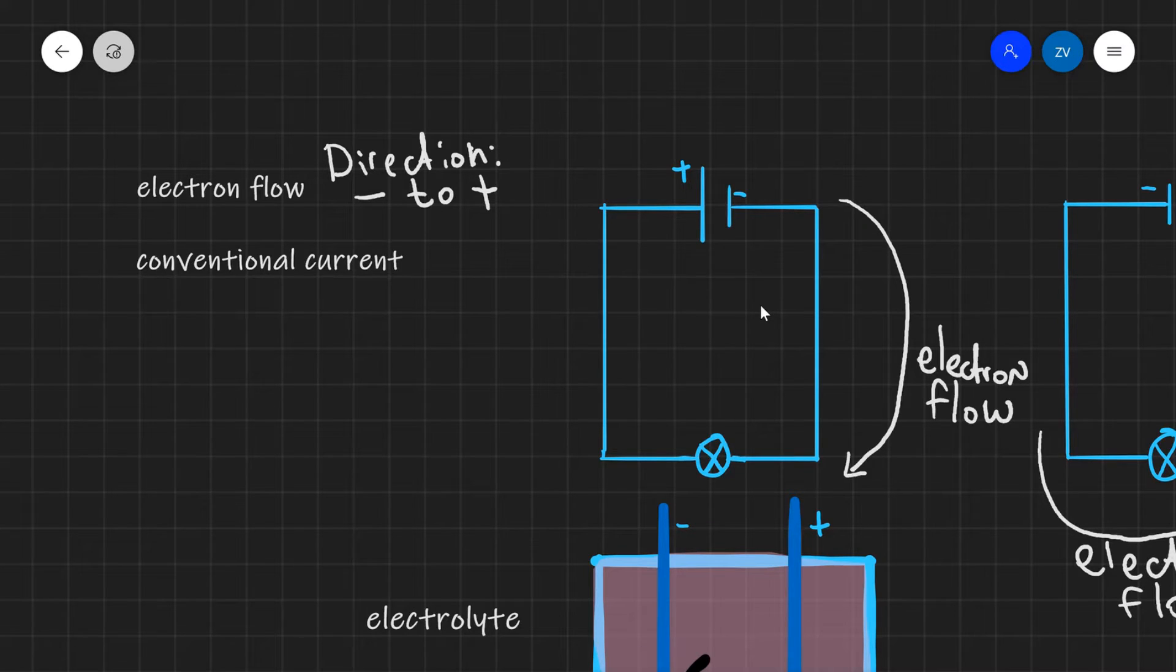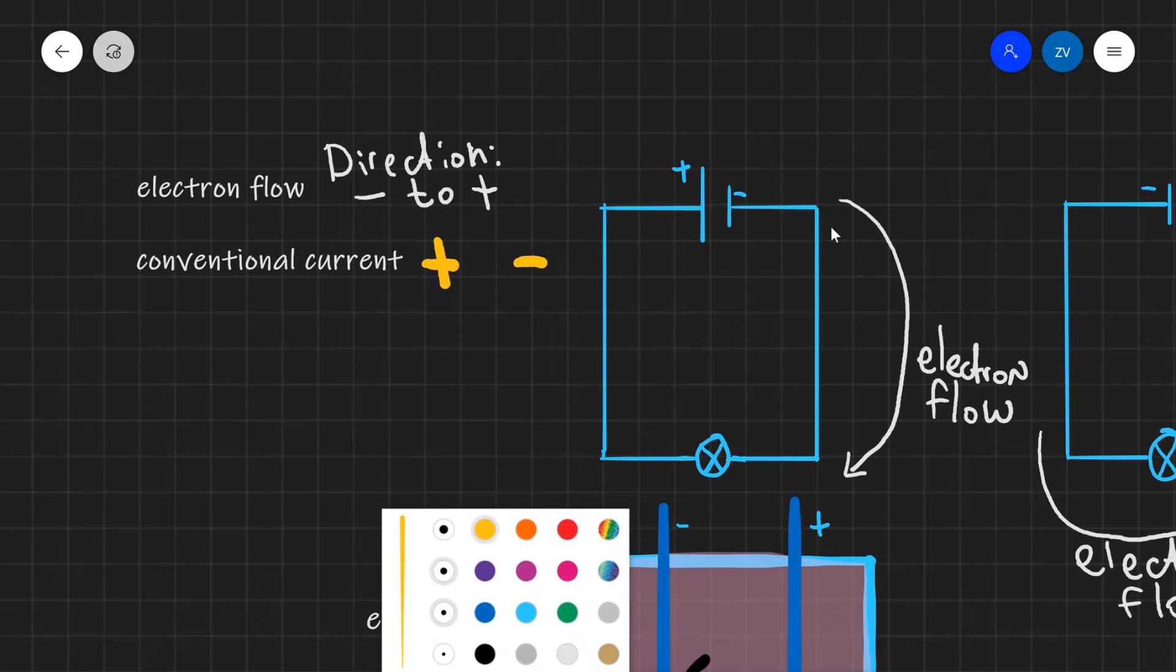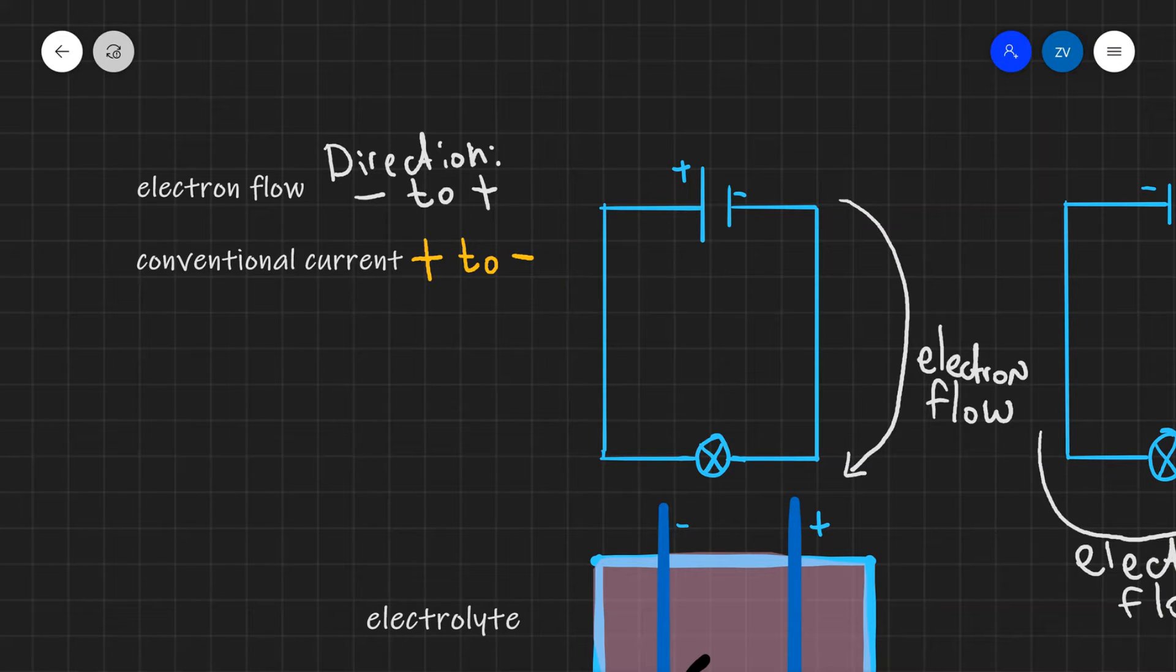Conventional current, though, is the opposite. It is always defined as positive to negative. So let me use yellow for this. In this case, the conventional current is going to flow from positive to negative.